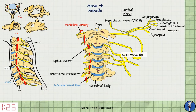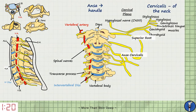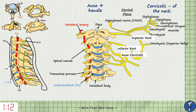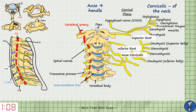Ansa is Latin for handle, and cervicalis denotes of the neck. C1 forms the superior root, whilst C2 and C3 fuse to form the inferior root. This loop innervates four infrahyoid muscles: the superior belly of the omohyoid, sternohyoid, sternothyroid, and finally the inferior belly of the omohyoid.